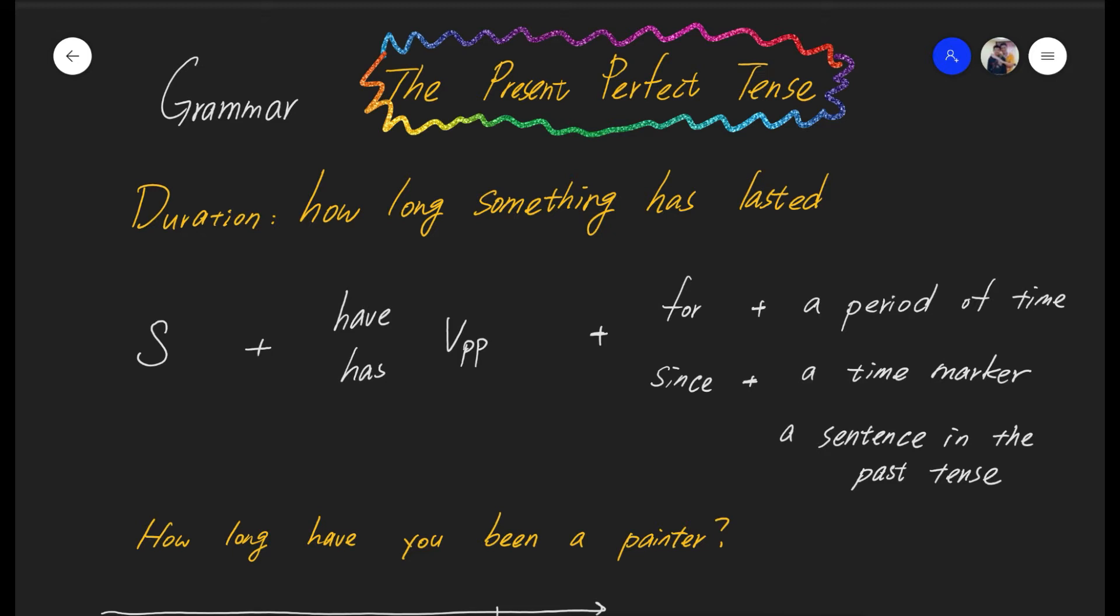Present perfect tense. This is the formula of present perfect tense. We need a subject with either have or has. Just like in the present simple tense, we use has with a third person singular subject like he, she, it, or a person's name like Bob, or John, or Peter, or May, or Kathy.